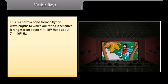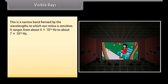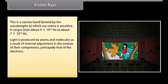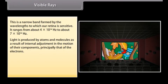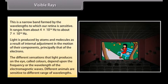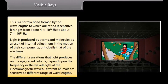Visible rays form a narrow band of wavelengths to which our retina is sensitive, ranging from about 4 × 10^14 Hz to about 7 × 10^14 Hz. Light is produced by atoms and molecules as a result of internal adjustments in the motion of their components, principally that of electrons. The different sensations that light produces on the eye — called colors — depend upon the frequency or wavelength of the electromagnetic waves. Different animals are sensitive to different ranges of wavelengths.